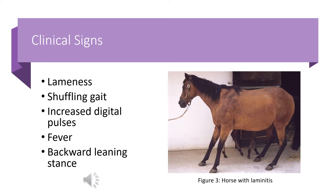Clinical signs of laminitis vary greatly from horse to horse and are largely determined by how far the laminitis has progressed. Often the horse will experience lameness with a shuffling gait, sometimes so severe they refuse to walk. They will also have increased digital pulses, fever, and a characteristic backward-leaning stance, as featured in the photo here.